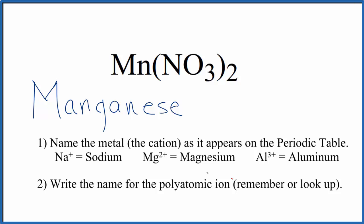Next, we write the name for the polyatomic ion. So you either memorize that NO3 is the nitrate ion, lowercase n, or if you're allowed, you look it up on a table of polyatomic ions.